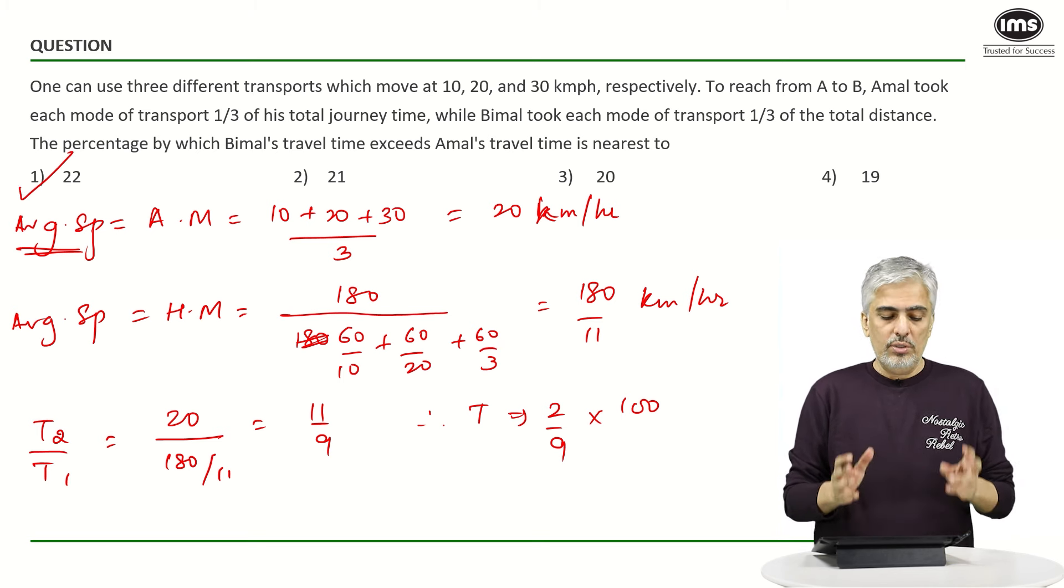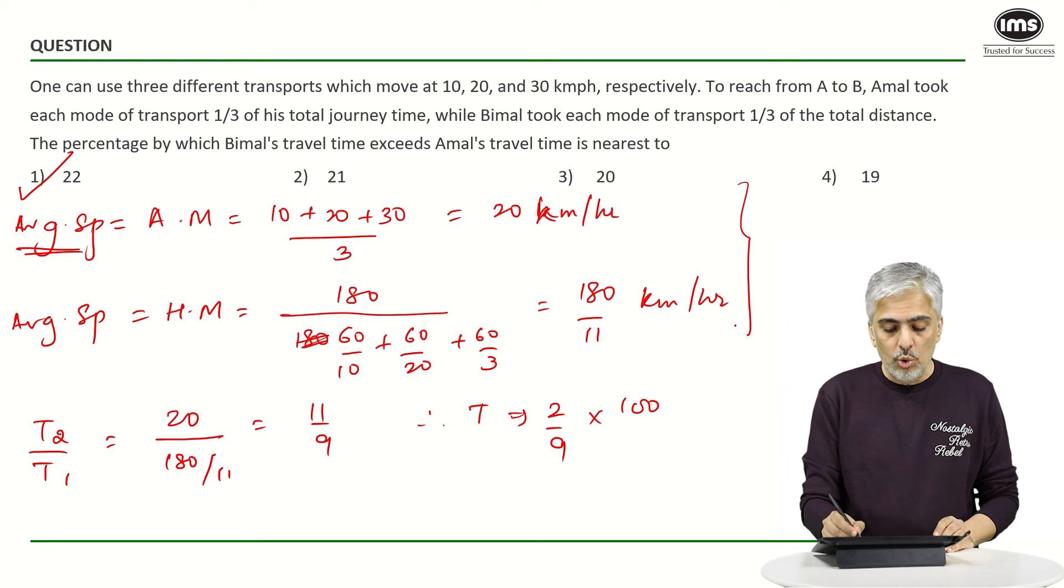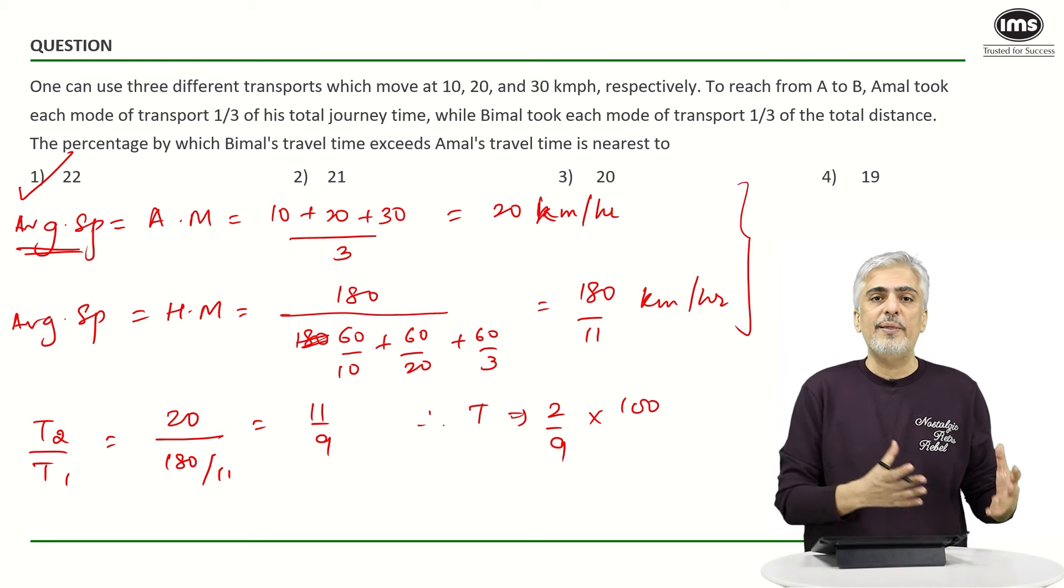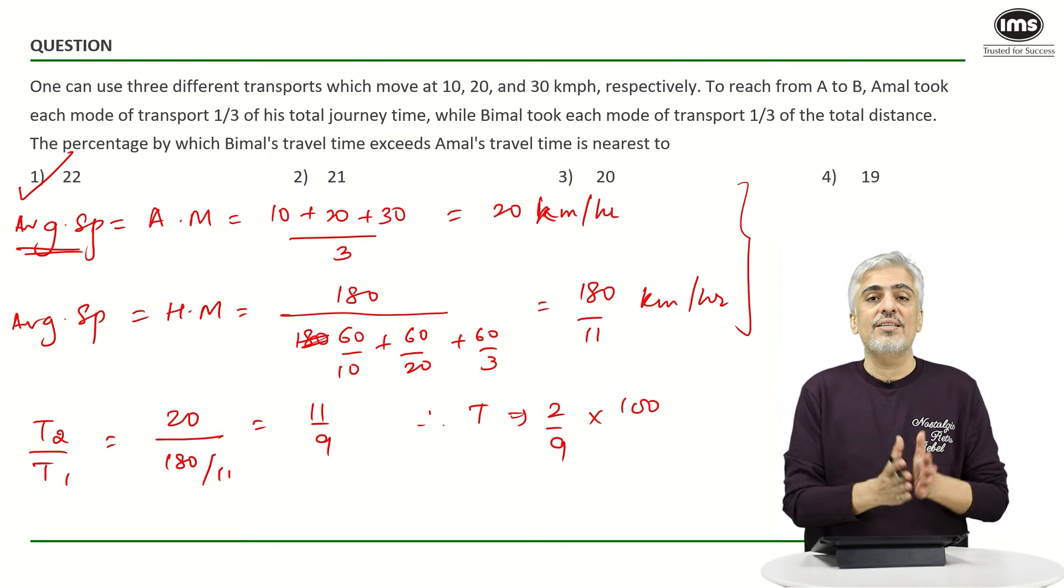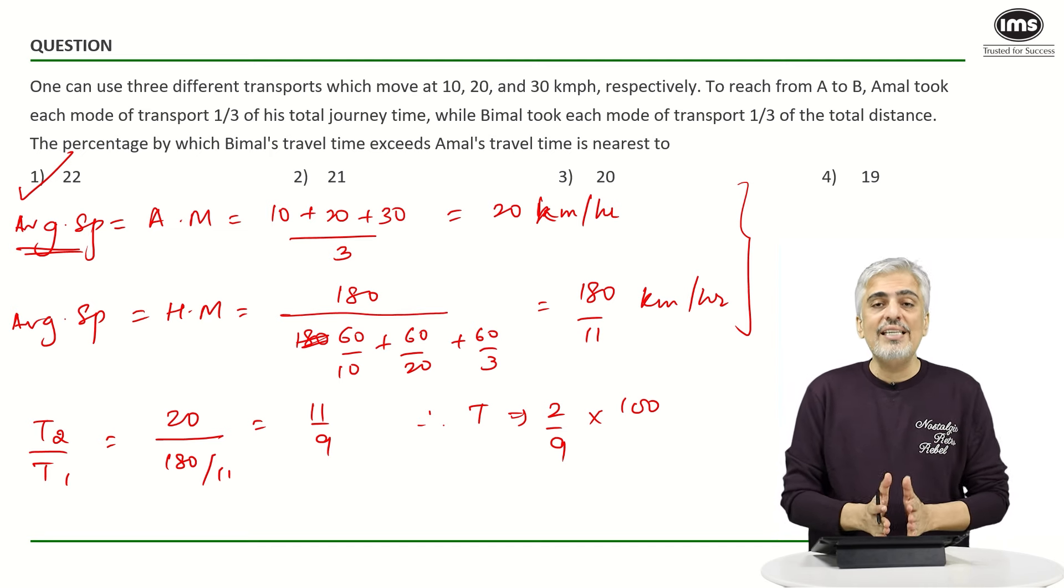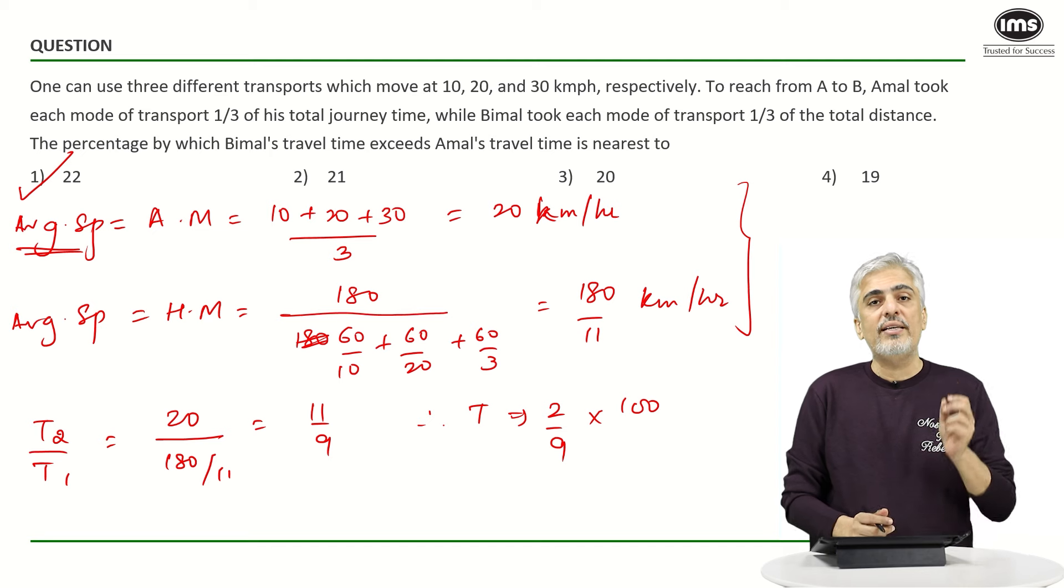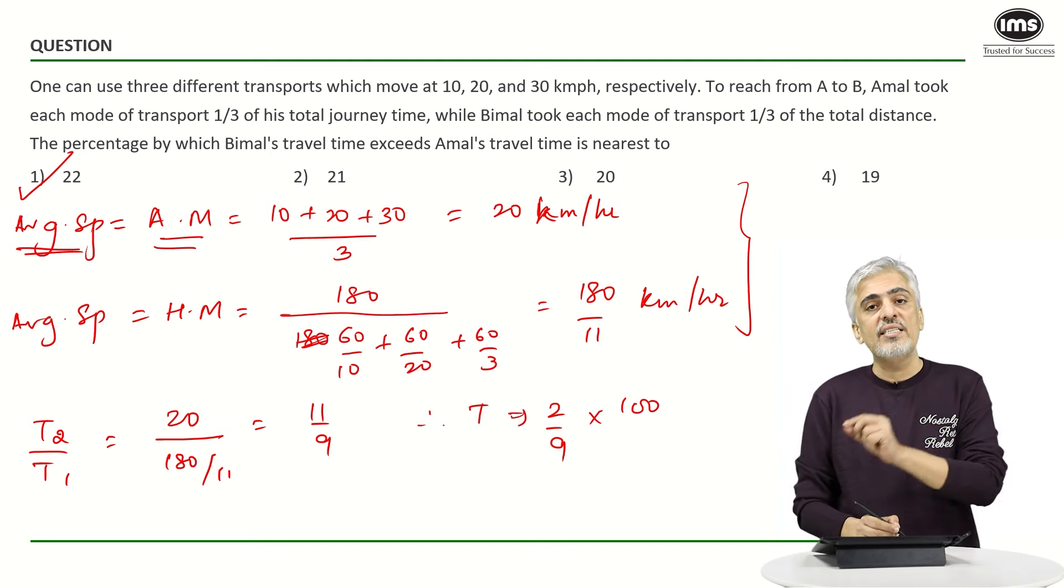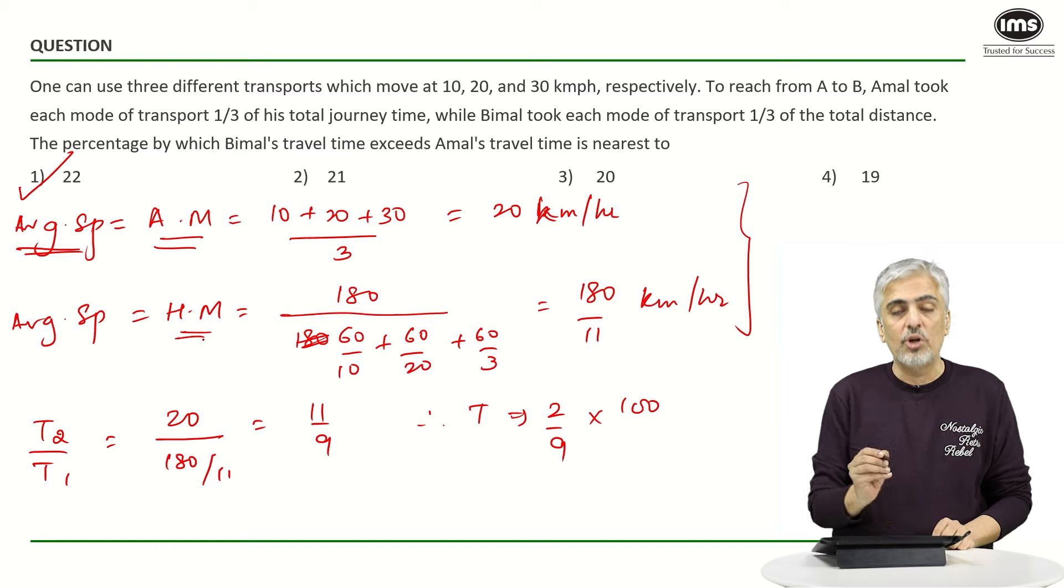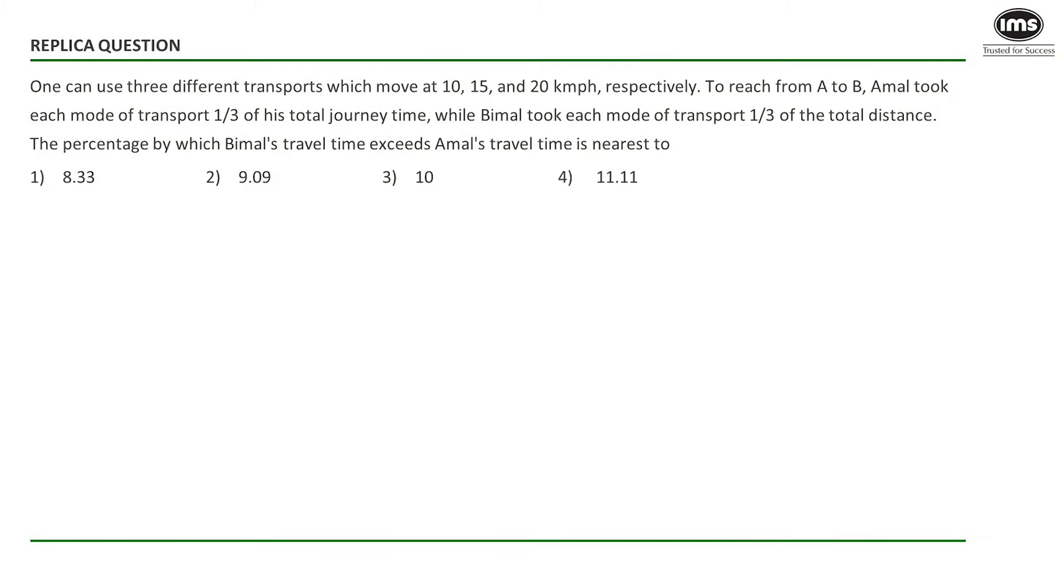So again it is good that a student knows this. Even if he does not know he can always use average speed is total distance upon total time. You can do that like I had done in the previous case. It's a very good approach, but still just knowing the concept that when time is constant average speed is arithmetic mean and when distance is constant average speed is harmonic mean.